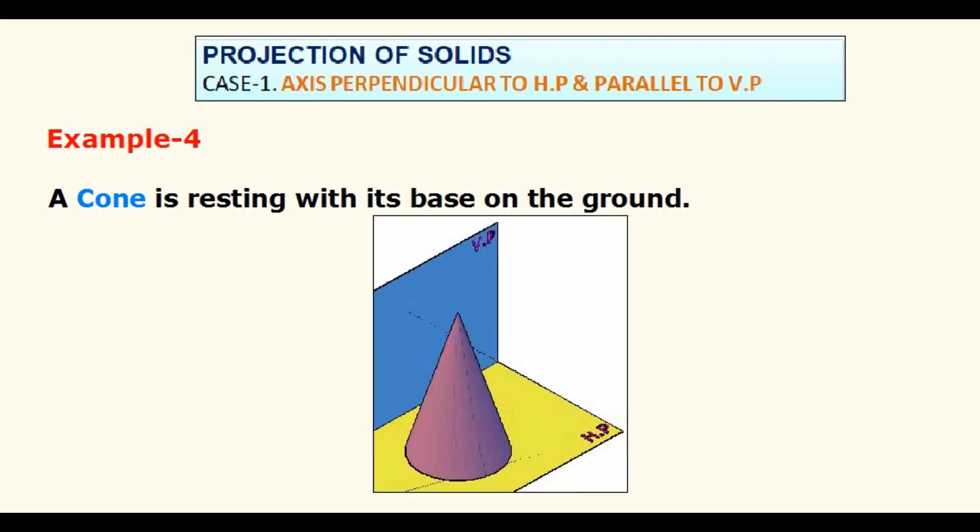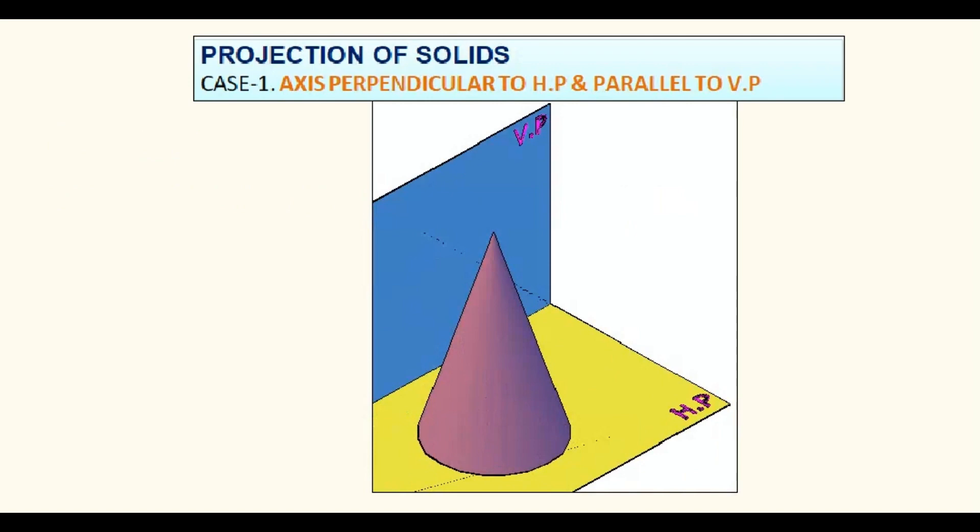The ground plan of the cone can be seen as a circle. Since the cone does not have any base edges or base corners, we do not need to handle any of the sub-conditions. Draw XY line first.